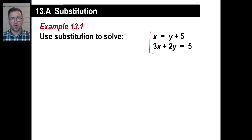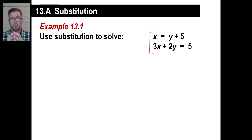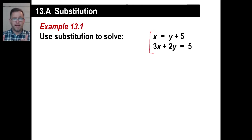You can only solve equations if you just have one variable. Because you collect together all the like terms, then you figure out what they are, and then you go, oh, x is equal to 12, or whatever. Okay, that's what you're aiming for.